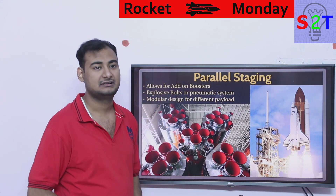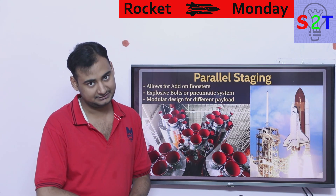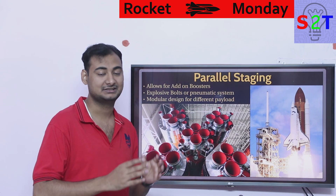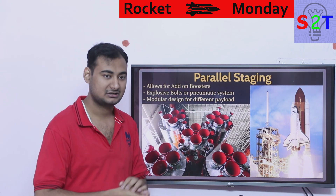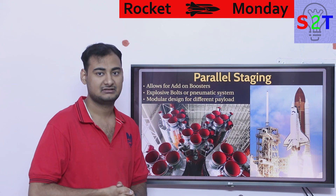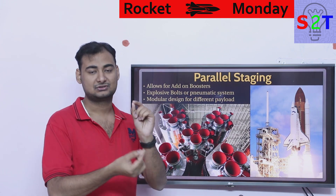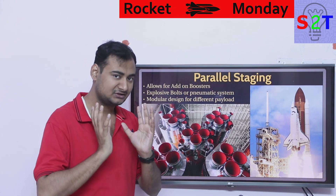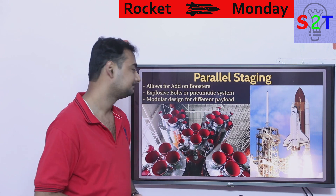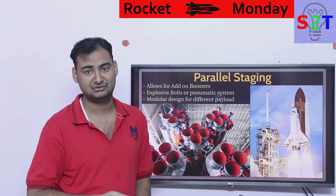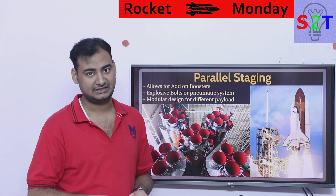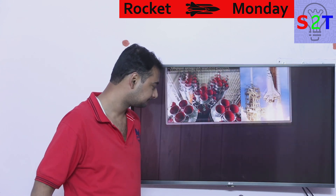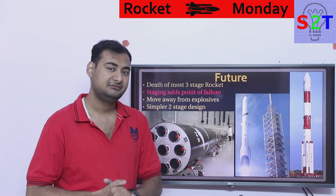This parallel staging approach is advisable in many scenarios. A lot of Indian rockets and the old Atlas series — Atlas 2, 3, and 4 — used multiple small boosters added in parallel to stage one to get extra thrust off the ground. It also gives you configuration flexibility: for a geostationary payload you add more boosters; for a lower orbit payload you add fewer. That's why parallel staging remains a useful tool in rocket design.